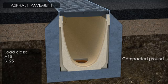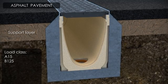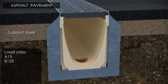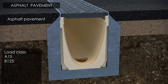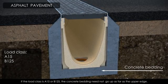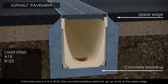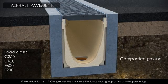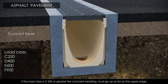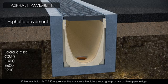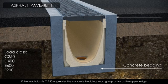For asphalt pavement, if the load class is A15 or B125, the concrete bedding does not have to be installed as far as the upper edge of the channels. When the load class is C250 or greater, the concrete bedding must be installed as far as the upper edge of the channel.